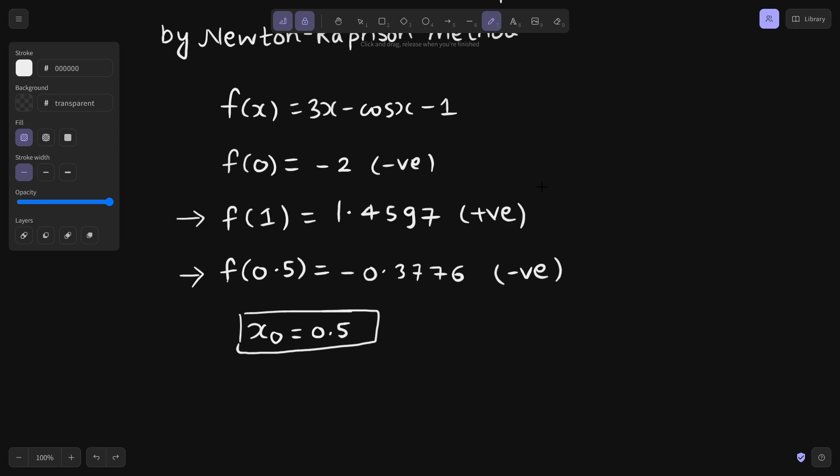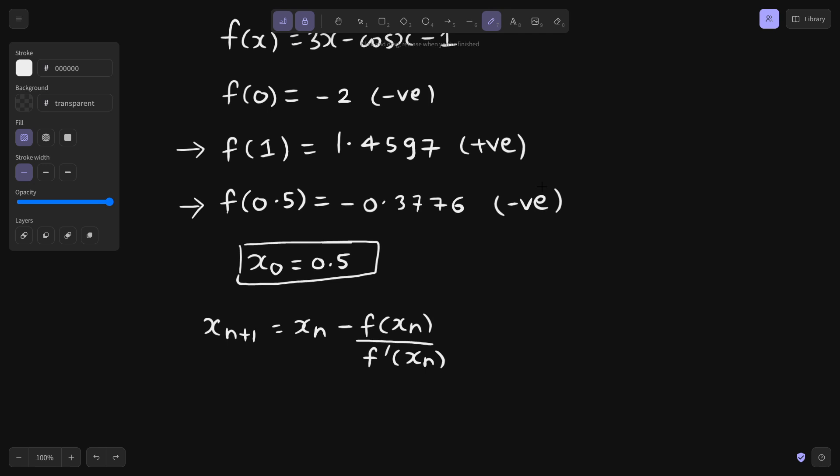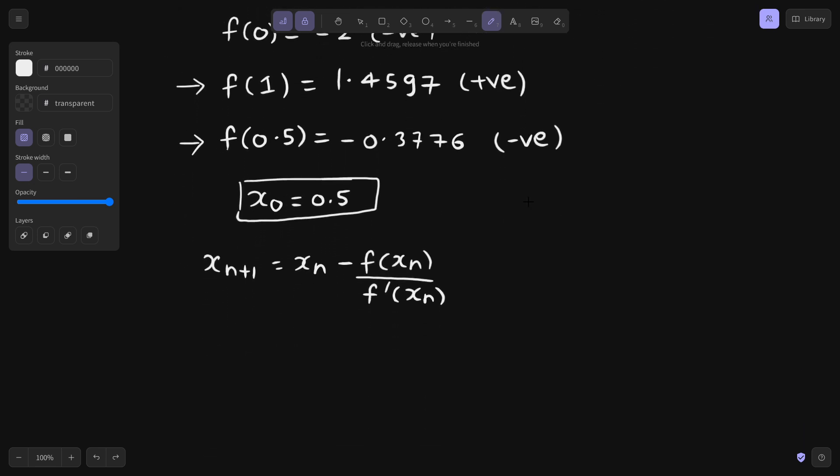What is the iterative formula in case of Newton-Raphson method? The iterative formula is xn+1 equals xn minus value of function at xn divided by value of derivative at xn. Because we need the derivative, let us calculate derivative. f'(x) will be equal to 3x derivative is 3, cos derivative is negative sign, so plus sign already one negative sign was there and minus 1 derivative is 0. 3 plus sin x came out to be the derivative.